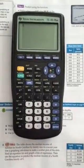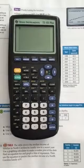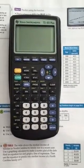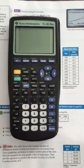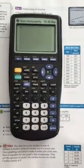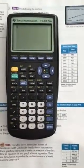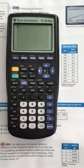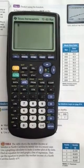Alright, this is an example of how to do number two, looking at family size versus median income using the graphing calculator to find the linear regression equation. So we're going to start by entering our data.